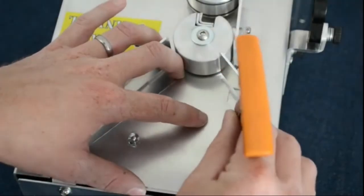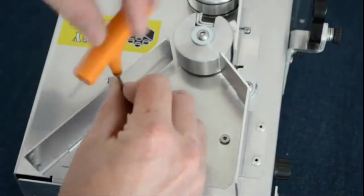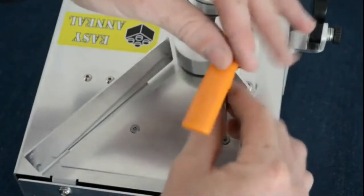For very short cases such as 6mm BR and 222 Remington, a short case adapter plate is supplied, which quickly mounts to the machine body.